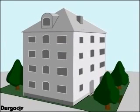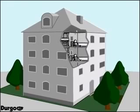The Durgo air admittance valve provides extra protection in case of fire. Fire rating tests were performed at FIRTO, Fire Insurers Research and Testing Organization, Boreham Wood, Hertfordshire, England. Durgo air admittance valves have been shown to make a fundamental difference in the spread of fire between floors.